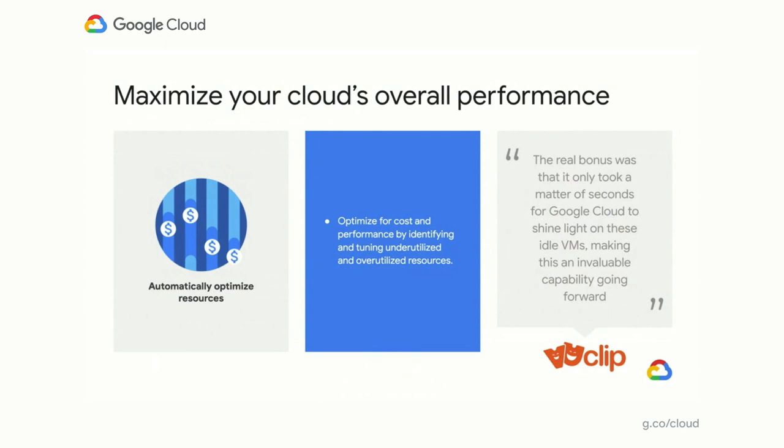At the end of the day, Active Assist aims to help you maximize your cloud's overall performance without you having to be on the hook to understand every nook and cranny of your cloud. Your cloud should work for you, and that's what we aim to do by helping you automatically optimize your resources. For example, we've had customers like ViewClip who have been able to take advantage of recommendations to quickly optimize their VMs and save money.